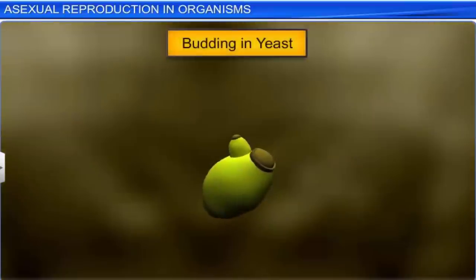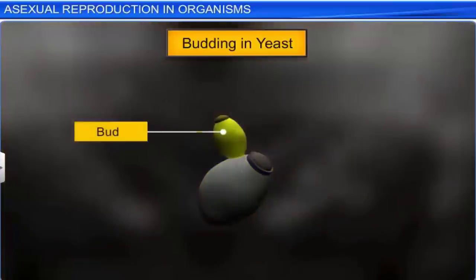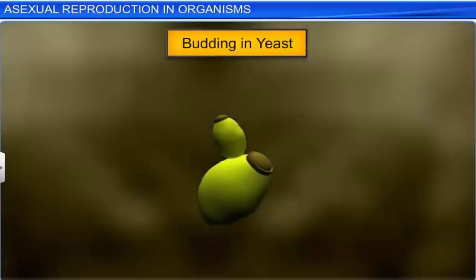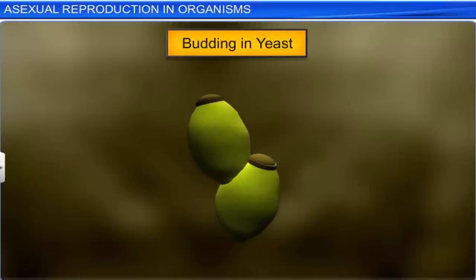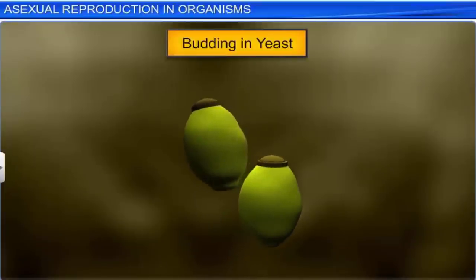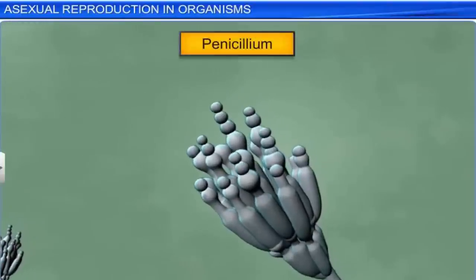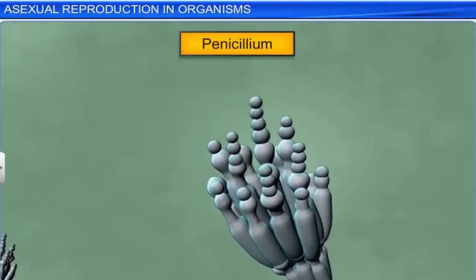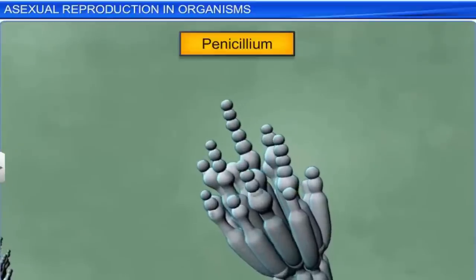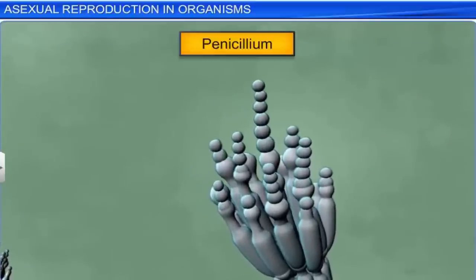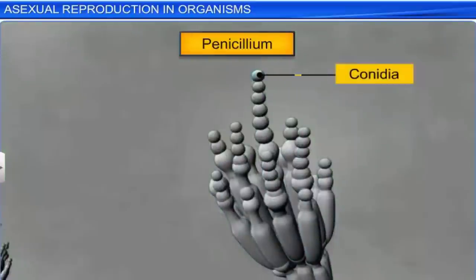Yeast, on the other hand, reproduces through budding, where the parent cell produces small buds through mitosis. These buds initially remain attached to the parent cell, and then separate to develop into new organisms. While yeast reproduces through budding, other members of the fungi kingdom, such as penicillium, reproduce through conidia, a special asexual reproductive structure.